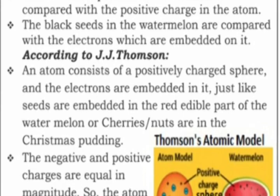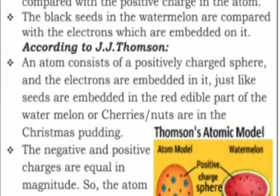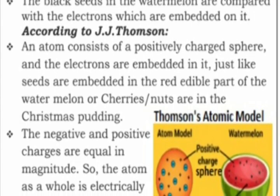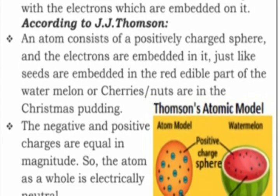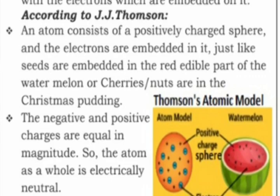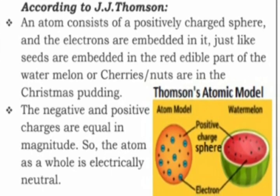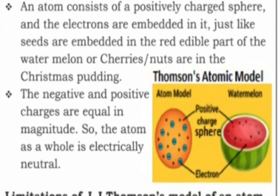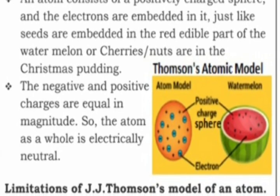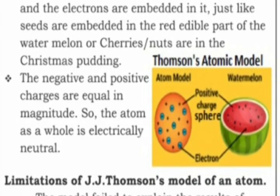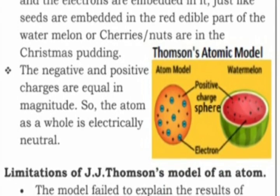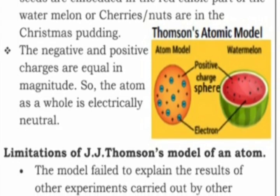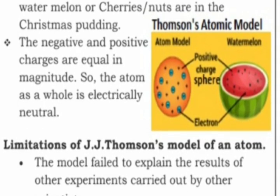According to J.J. Thomson, an atom consists of a positively charged sphere and the electrons are embedded in it, just like sweets are embedded in the red edible part of the watermelon, or cherries and nuts are in the Christmas pudding. You can see the Thomson atomic model here. The negative and positive charges are equal in magnitude, so the atom as a whole is electrically neutral.